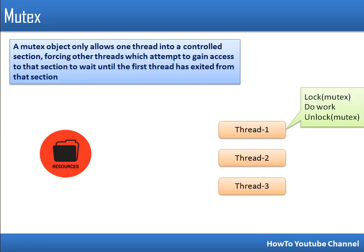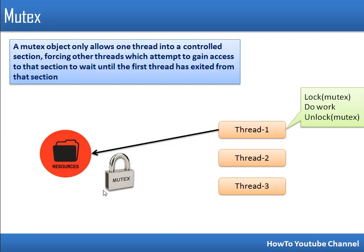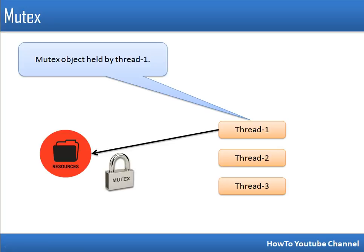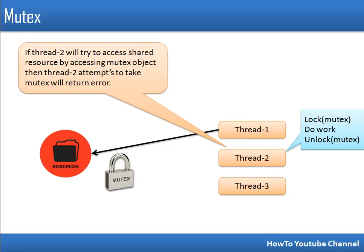Here we have a resource and three threads trying to access it — either simultaneously or sequentially. All threads have the same code: they first lock the mutex, do their work, then unlock the mutex. Thread one starts execution first, so it locks the mutex. This resource represents a mutex object — it is now locked and thread one holds it and is doing its work.